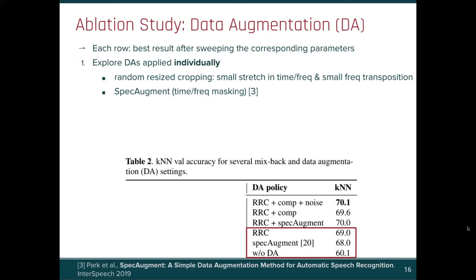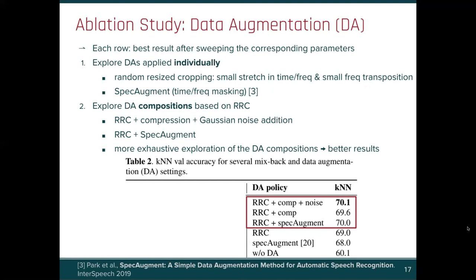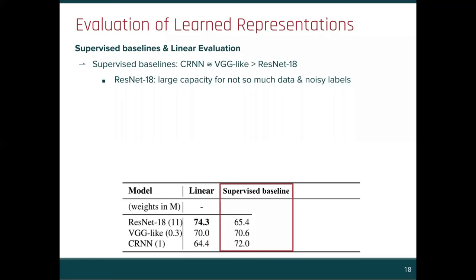We then explore compositions of several augmentations, including the cropping one, and come up with two combinations that are best in our experiments. We know that more exhaustive exploration of these compositions will likely lead to better results, at the expense of more intensive experiments.